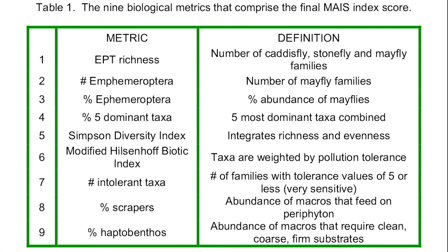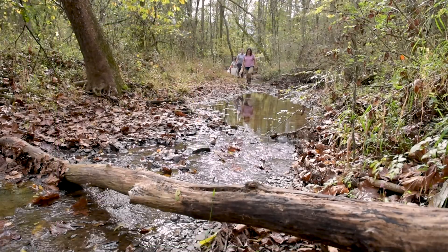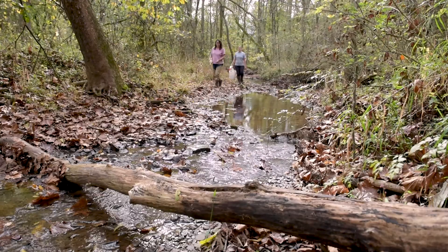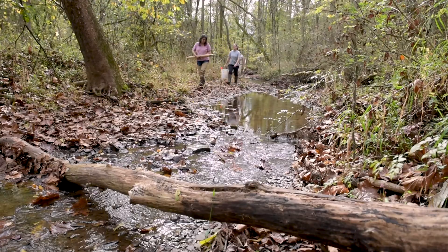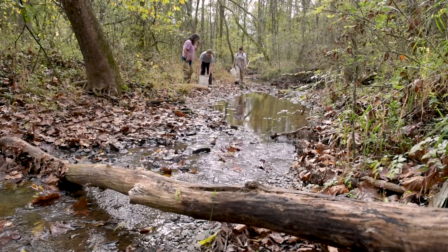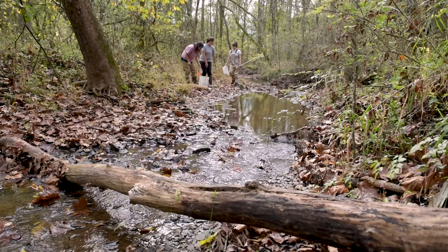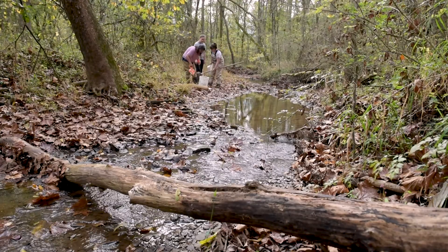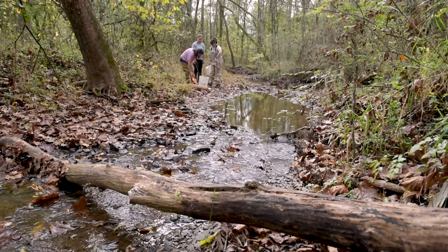We use an index called the MAIS. It stands for Macroinvertebrate Aggregate Index for Streams. The method only requires an hour or two in the field and family-level taxonomic identification of the macroinvertebrates, so it's very easy to perform. However, there are specific methods that we use in the field to make sure the results are comparable to other sample dates.